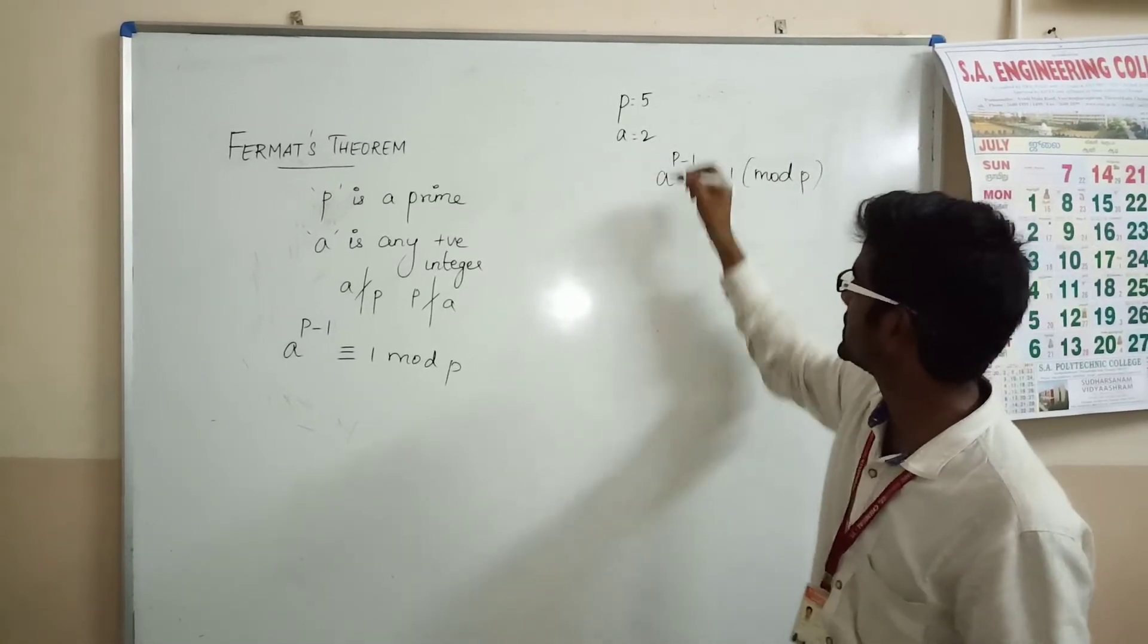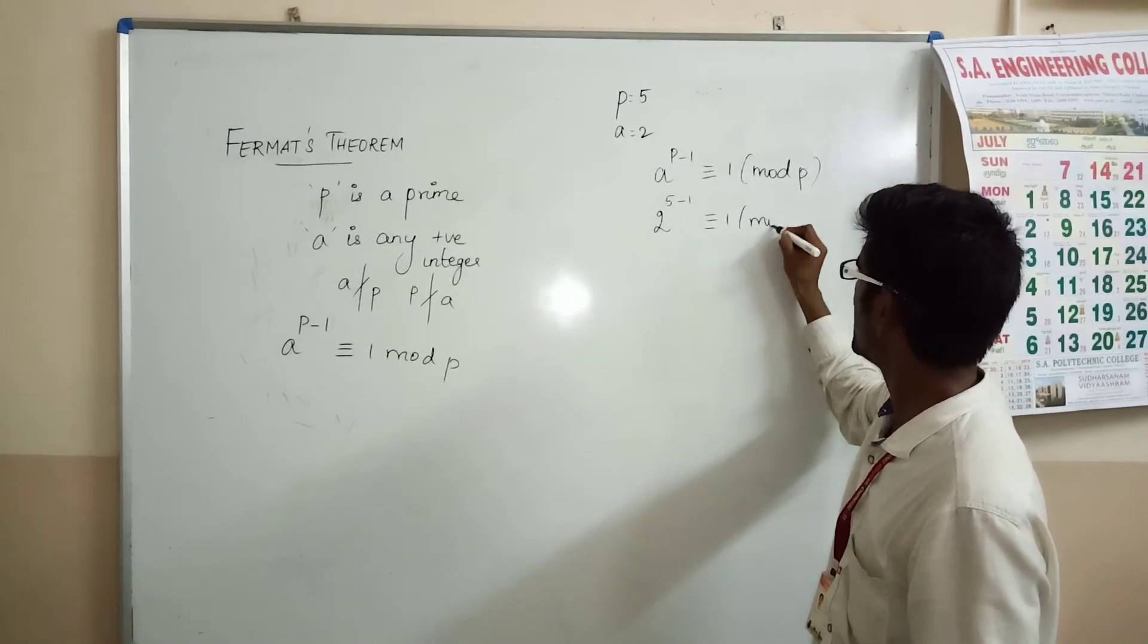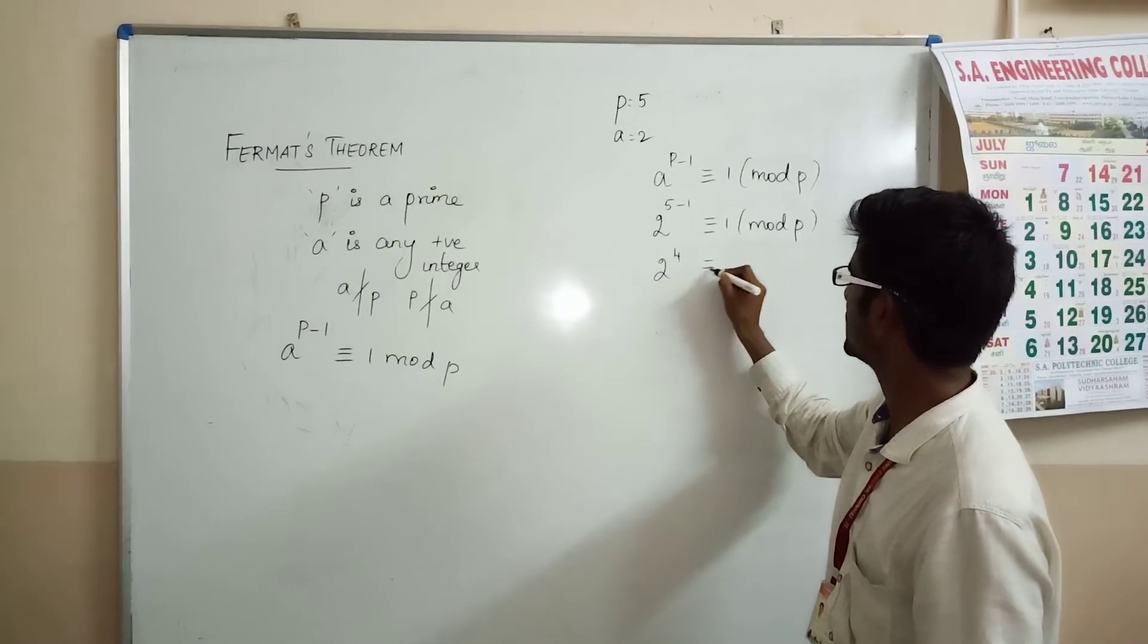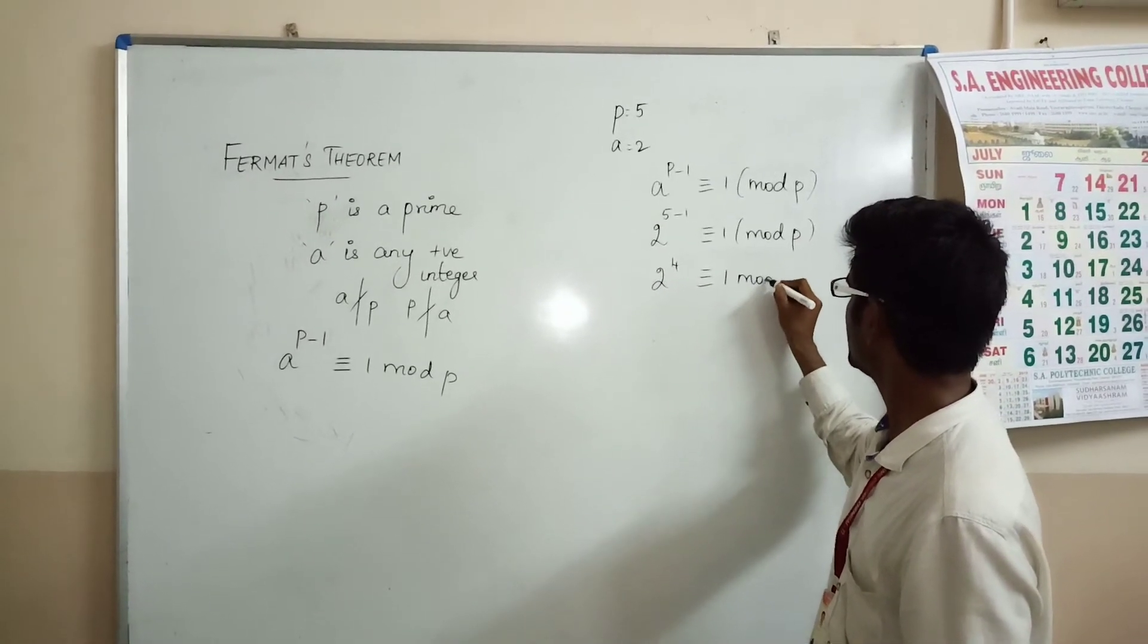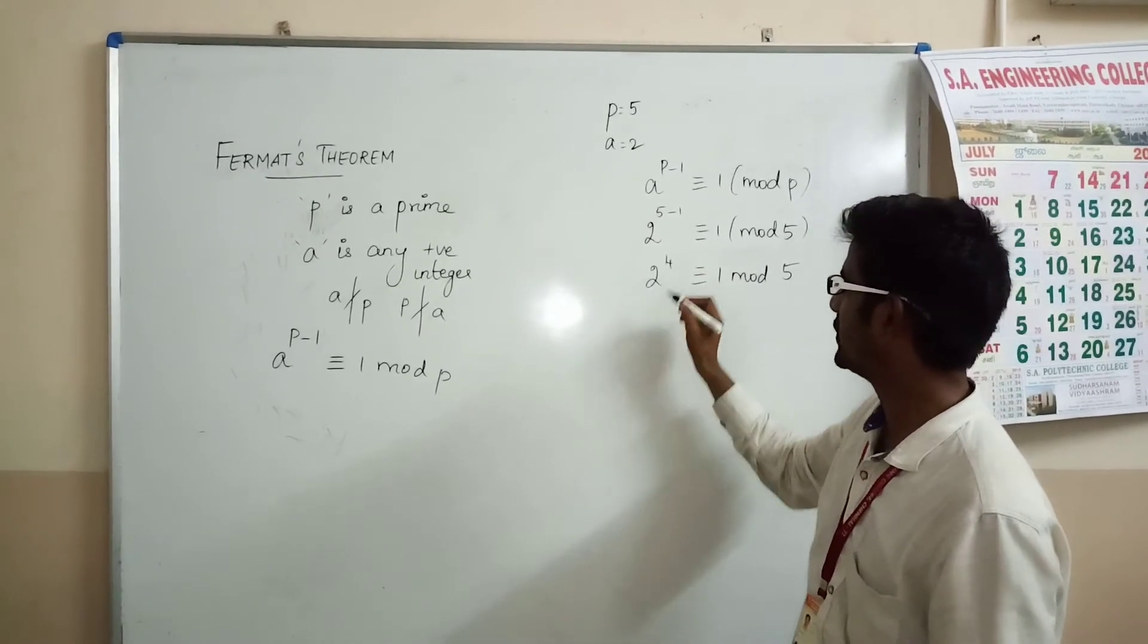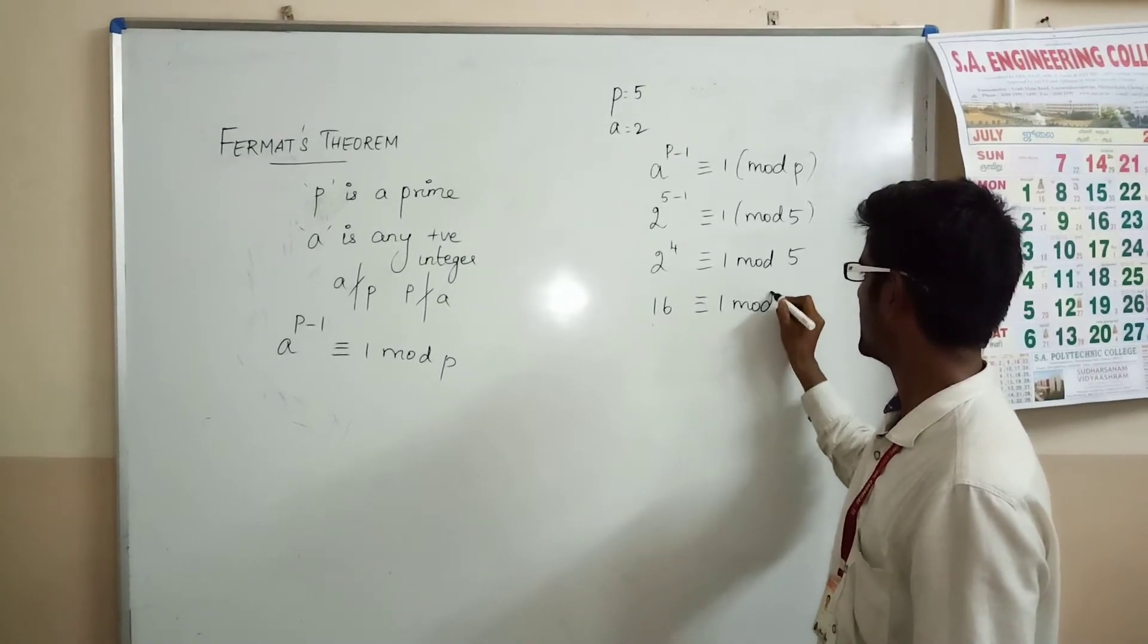We will substitute the values here. 2^(5-1) = 2^4 = 16 is congruent to 1 mod 5.